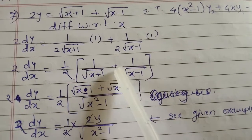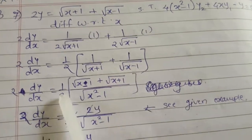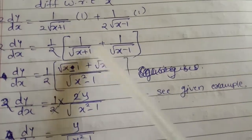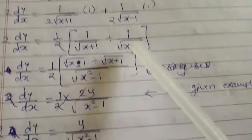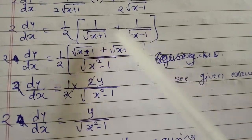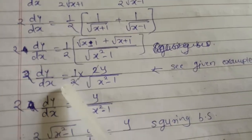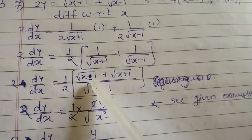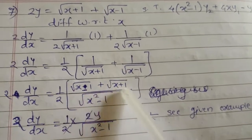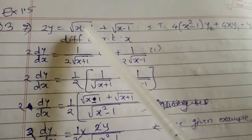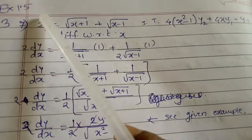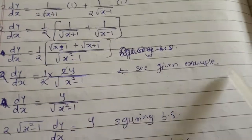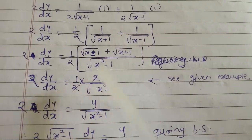Inside the bracket we get 1/√(x+1) plus 1/√(x-1). Taking LCM: √(x+1)·√(x-1) = √(x²-1). So 2·dy/dx = (1/2)·[√(x-1) + √(x+1)] / √(x²-1). Now, from the given example, √(x+1) + √(x-1) = 2y. Substituting this, the two 2's cancel, giving 2·dy/dx = y / √(x²-1).